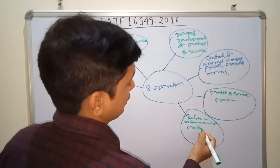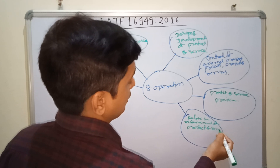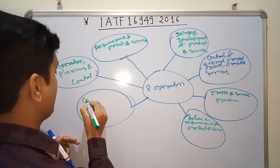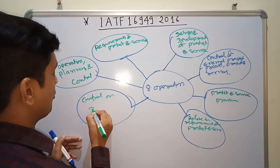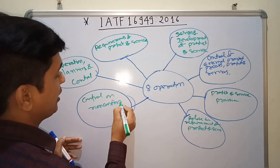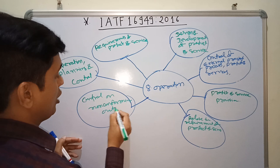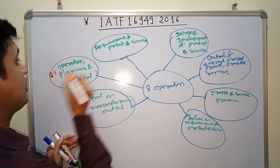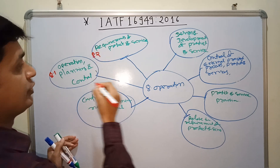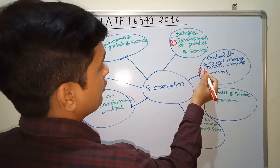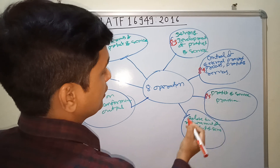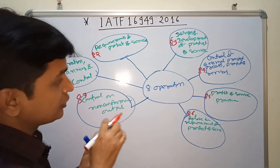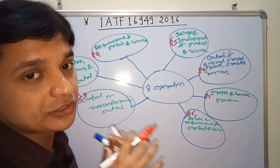Sub-clause 7 is Control of Non-Conforming Output. So to summarize: sub-clause 8.1, 8.2, 8.3, 8.4, 8.5, 8.6, and 8.7 — these are all the clauses that are key to IATF 16949:2016.